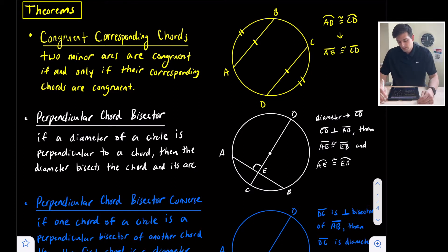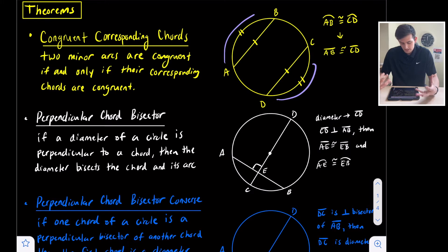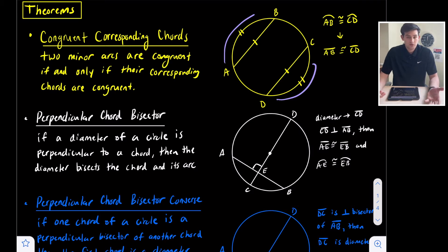Looking at the diagram on the right in yellow, we have two chords AB and CD. Our two minor arcs are arc AB and arc CD. What this theorem tells us is that if the chords are congruent — if AB is congruent to CD — then the arcs are also congruent. We can use that to solve some problems.